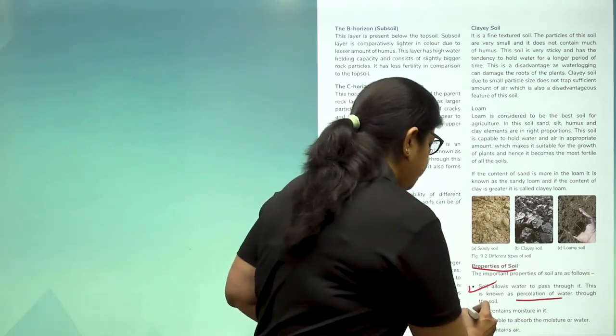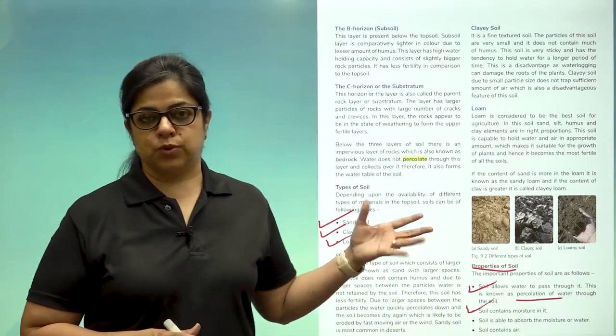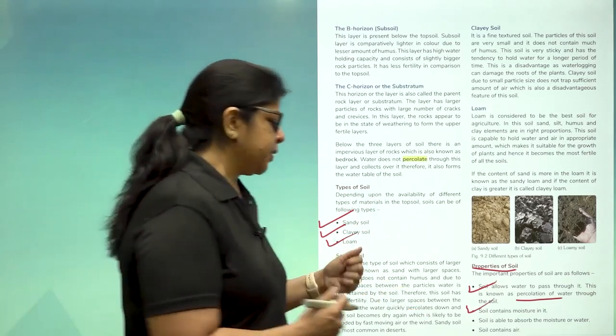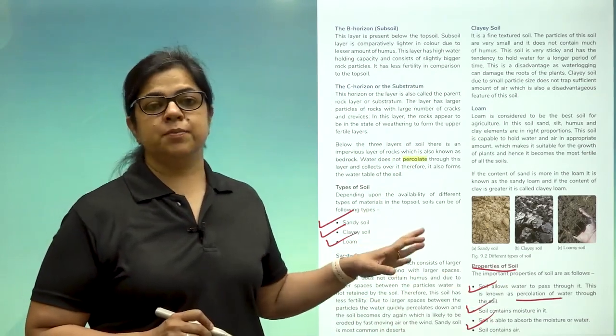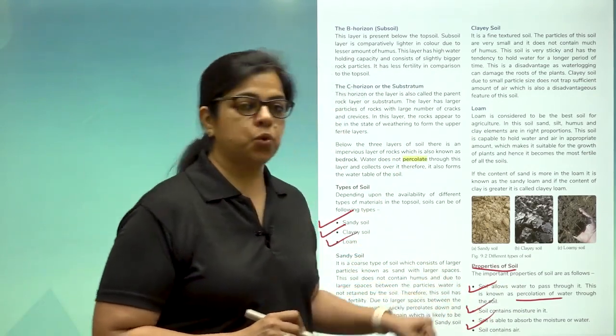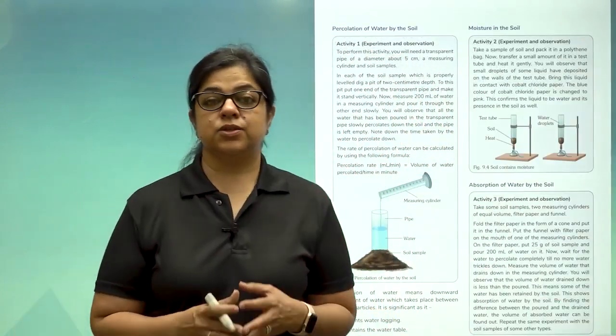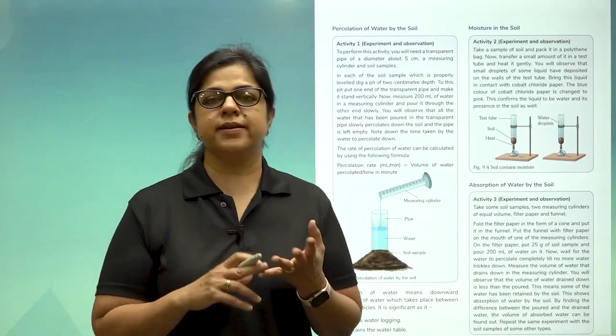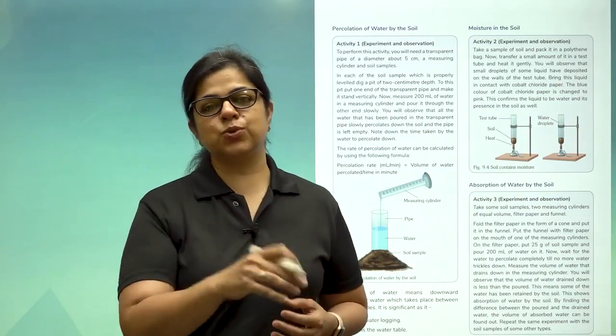The second property is that soil contains moisture in it. Of course when you water the soil, the excess water goes and some amount will always be there. The third property is that it also is able to absorb moisture in water and then soil contains air. So let us do a simple experiment to find out that soil contains water, soil contains air.